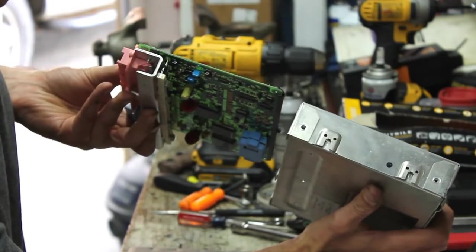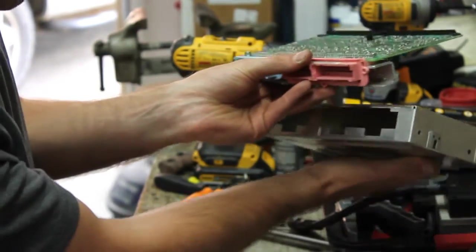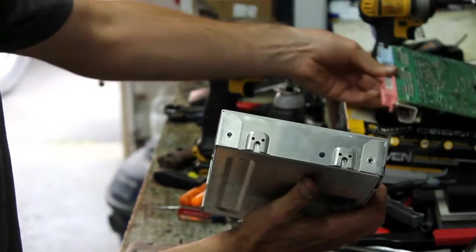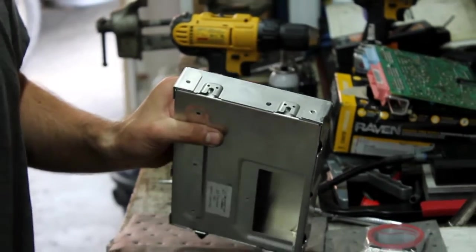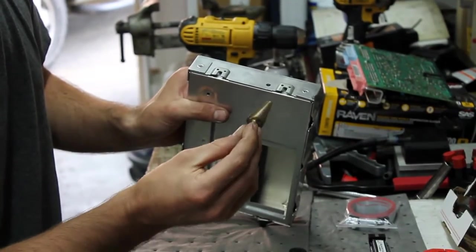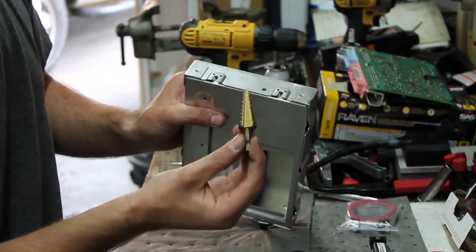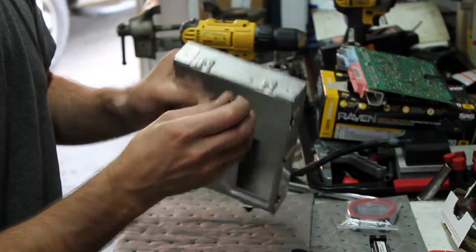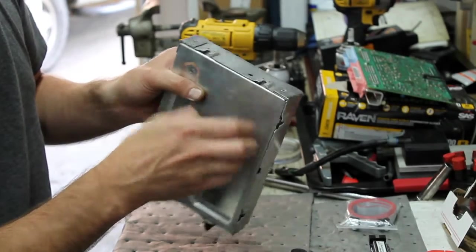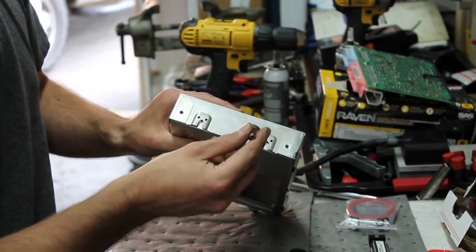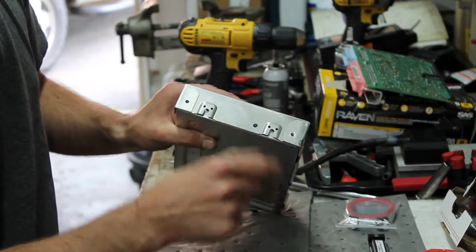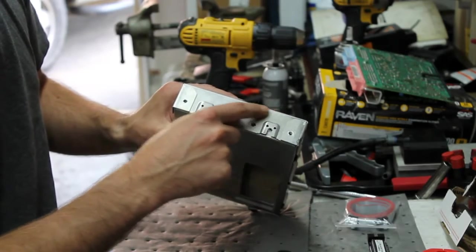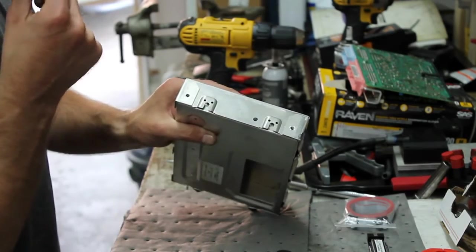Once we mark this hole here to the left of this clip, we can take our step bit, and the size we're going to drill is three quarters. The step bit really helps, because we're going through two layers here. You need to orient the hole upwards enough that we can drill it to three quarters and fit the grommet, but we want to stay away from probably about half inch on top here.